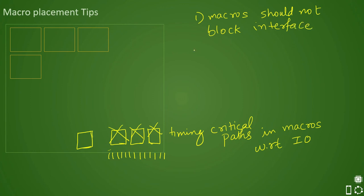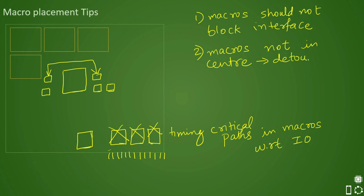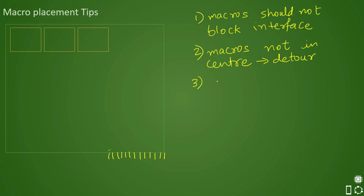The second guideline is that macros should not be placed in the center of the core area. If you place a macro in the center, it will block lower-level routing resources. Any cells that need to communicate across the chip will have their signals detouring around the macro. This detour is what you do not want.